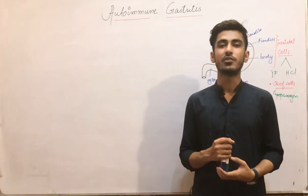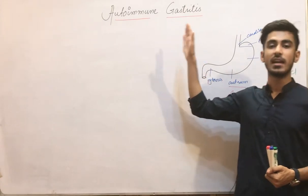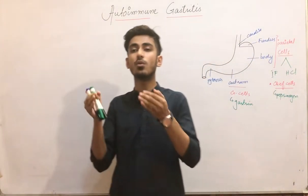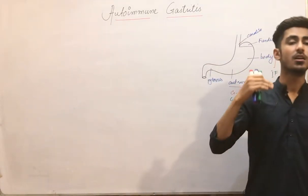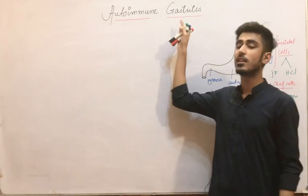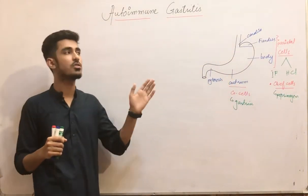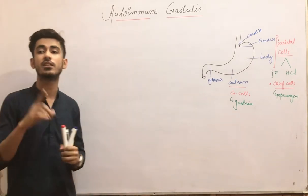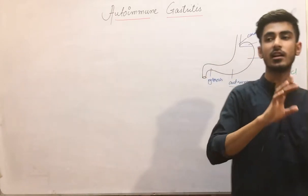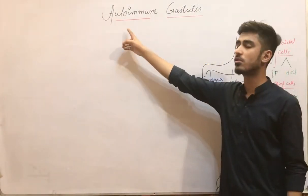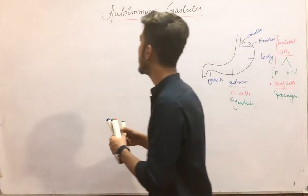This is Dr. Saad, and today my topic is autoimmune gastritis. As the name indicates, 'autoimmune' means our own immune response or immune system affects or damages the gastric mucosa. Autoimmune gastritis is the most common cause of chronic gastritis after H. pylori — H. pylori is first, and then autoimmune gastritis is the second most common cause.